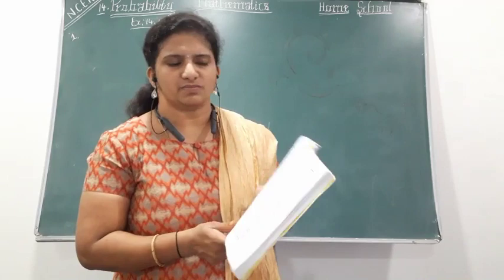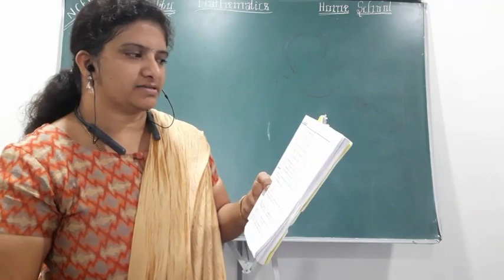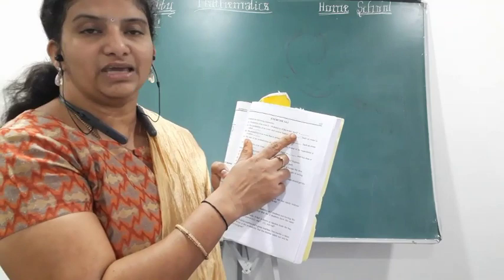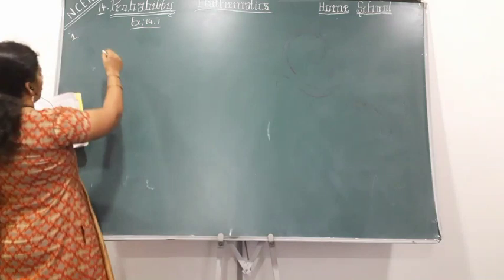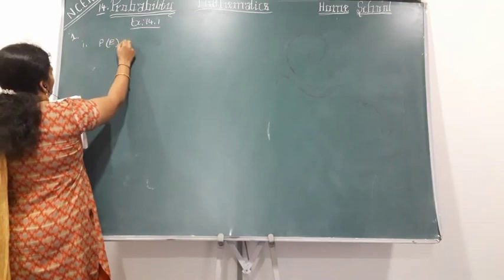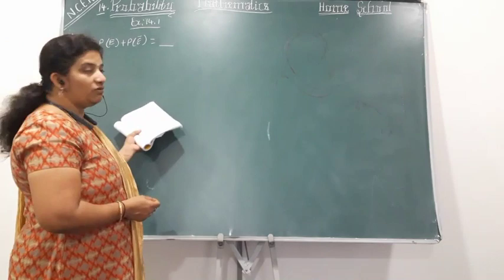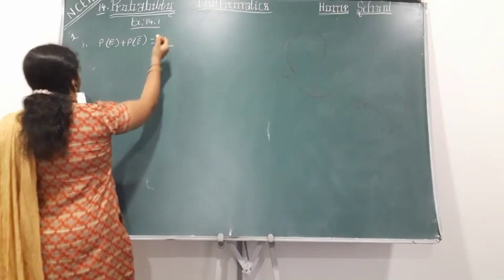In this first main we have five bits. We are going to solve these orally. First question: complete the following statements. Probability of an event E plus probability of the event not E is dash. P of E plus probability of not E is equal to dash. We know from our introduction class: probability of an event plus the complementary of that event is equal to one.